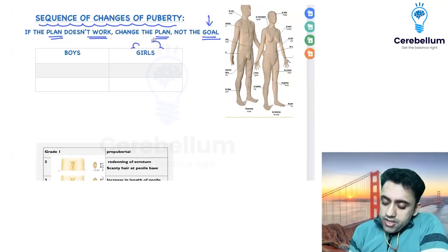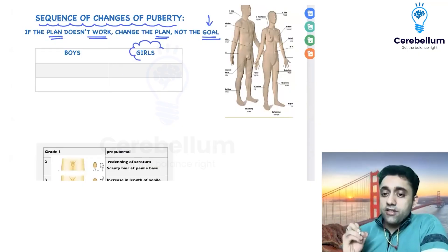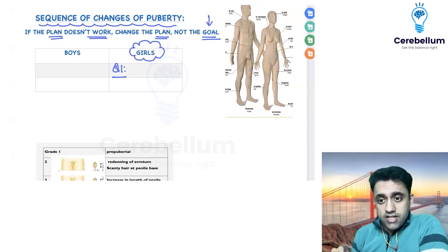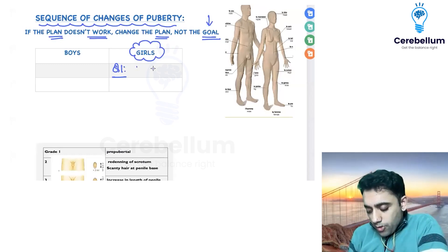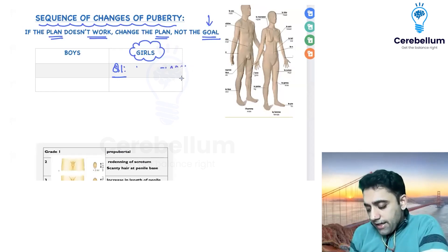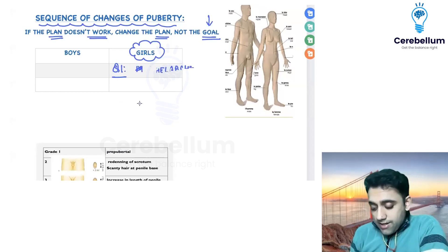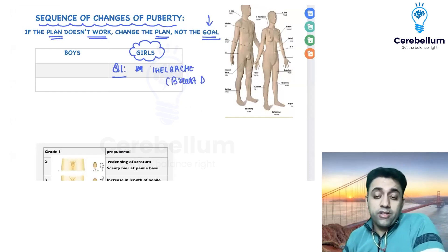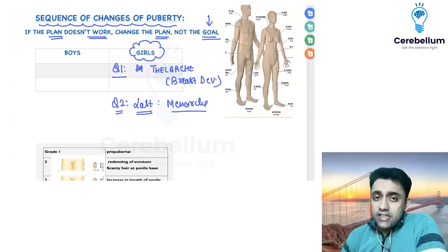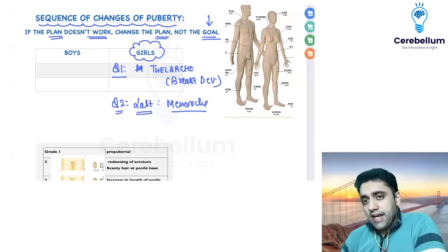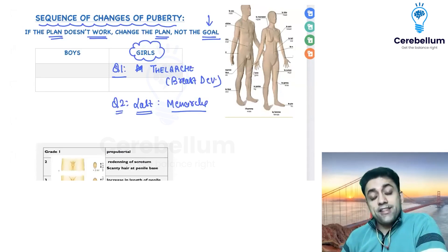What is the sequence of changes of puberty in a girl? Exam entrance question number one: which is the first visible sign of change of puberty in a girl? The first sequence of change is thelarche — thelarche is nothing but breast development. Exam entrance question number two: which is the last visible sign of change of puberty in a girl? The answer is menarche. In girls, the changes are from top to bottom — first is breast development, last is menarche.